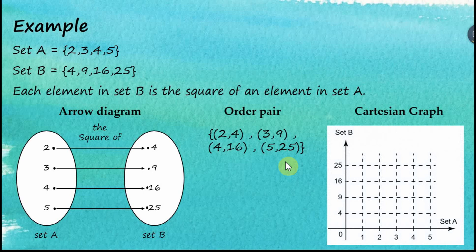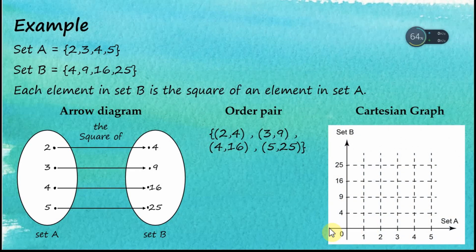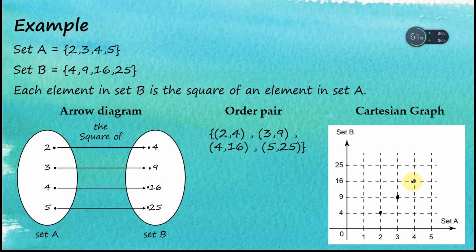For the Cartesian graph, we draw two axes. The horizontal axis always represents set A, and the vertical axis always represents set B. We then plot the related pairs: 2 maps to 4, 3 maps to 9, 4 maps to 16, and 5 maps to 25. This is how we express relations in a Cartesian graph.